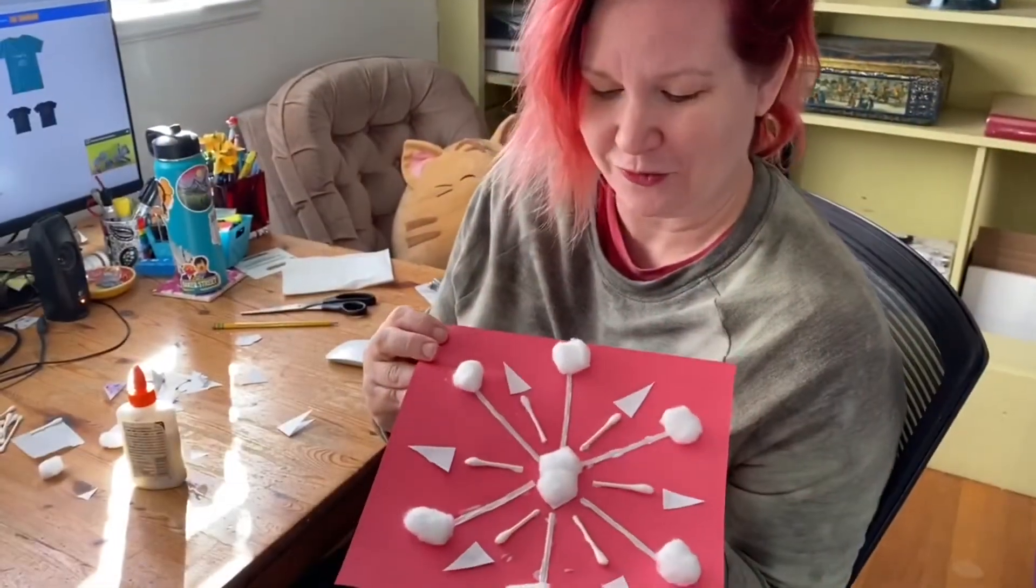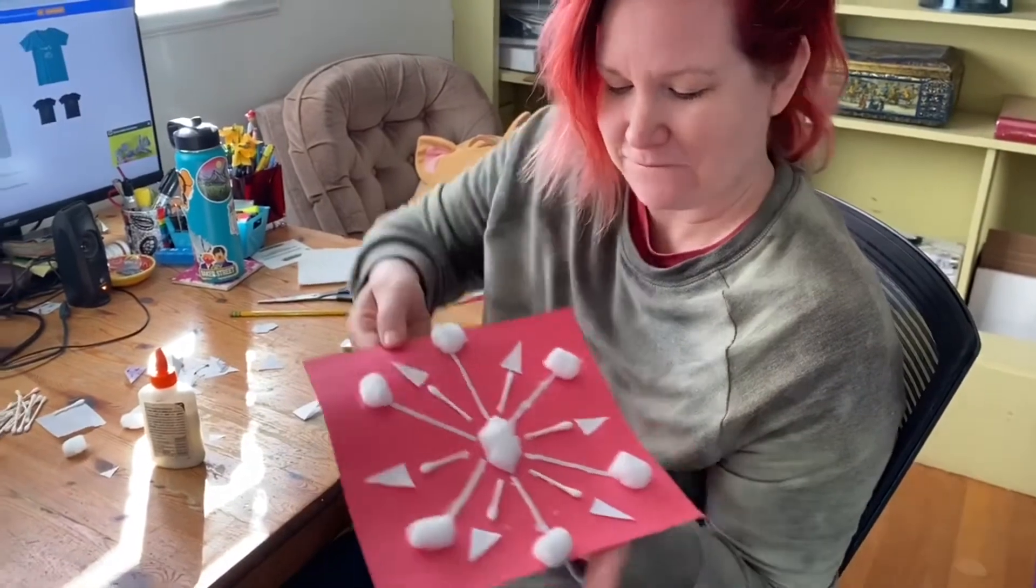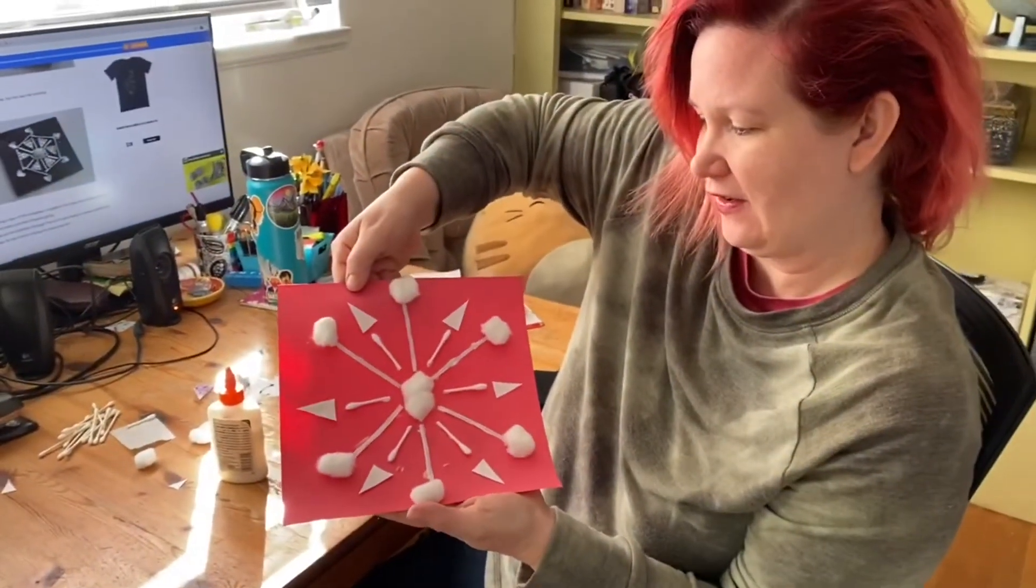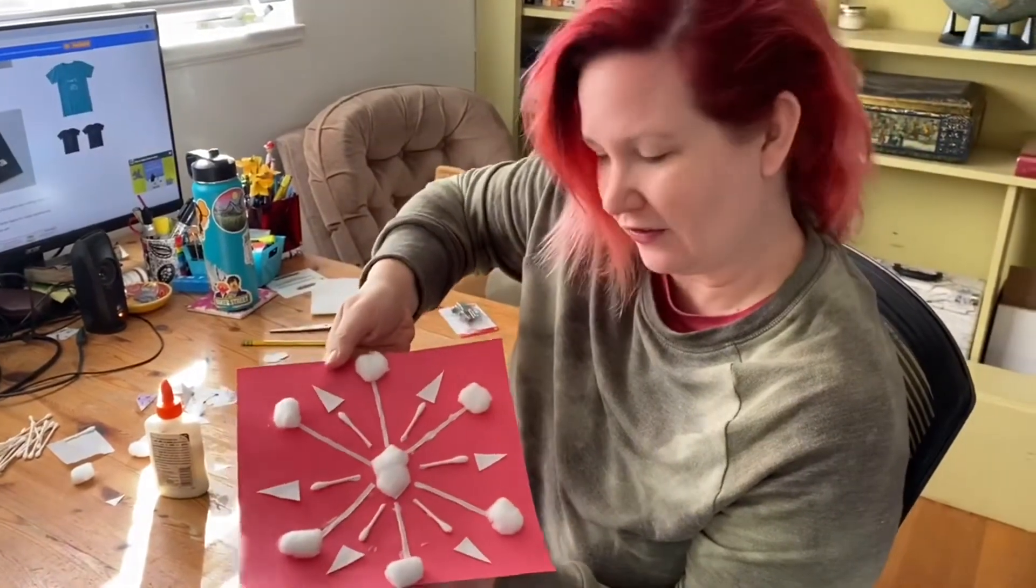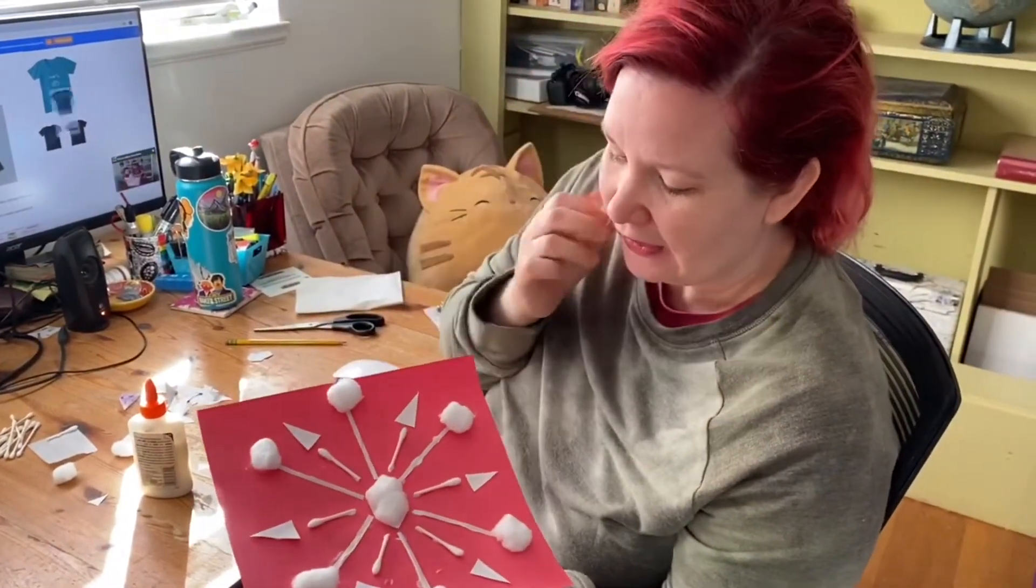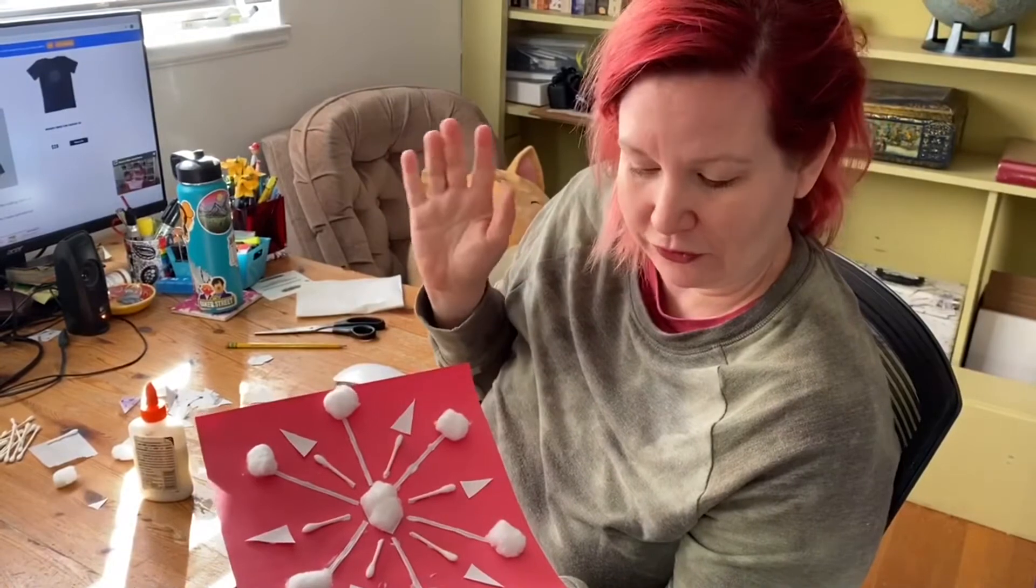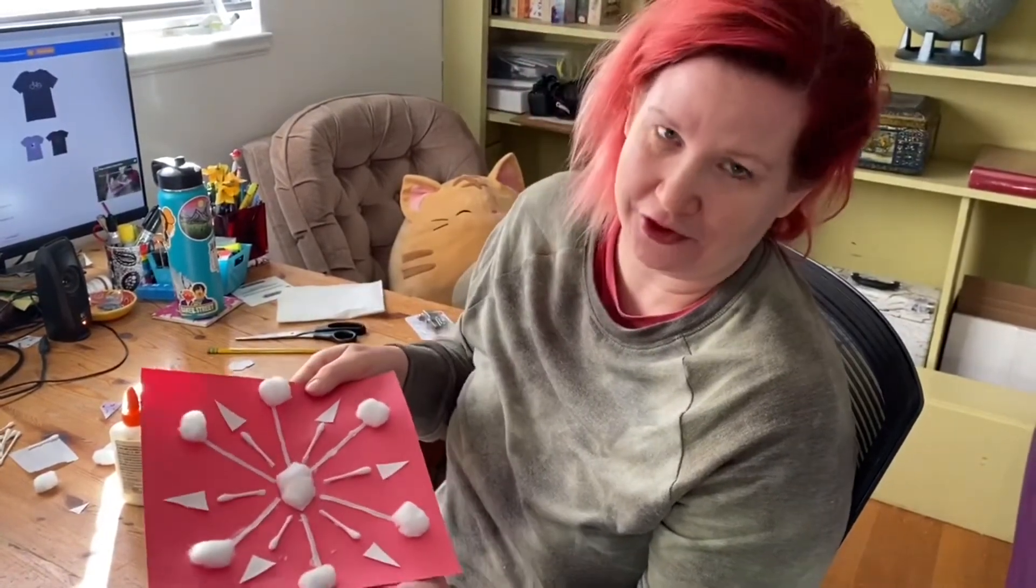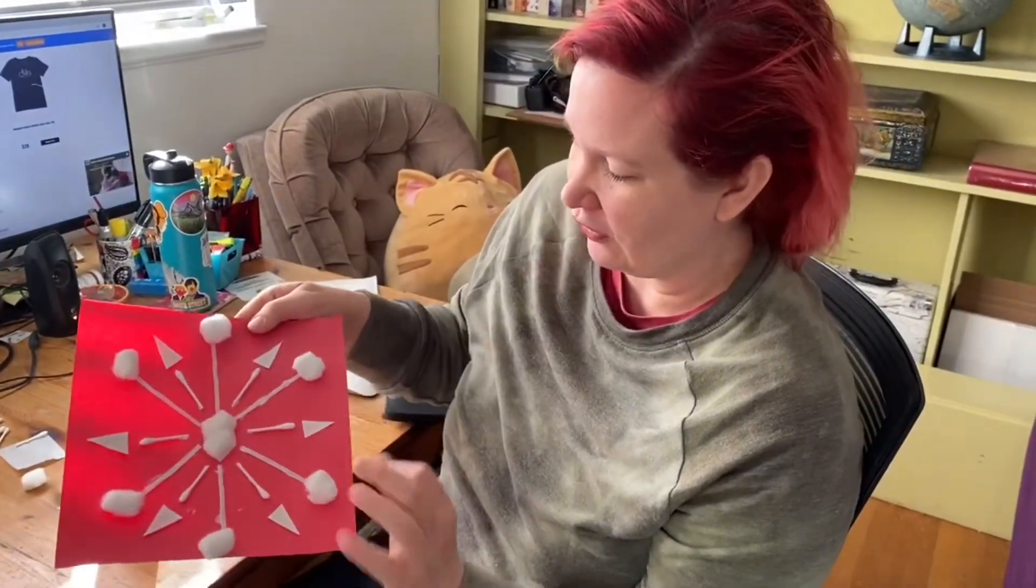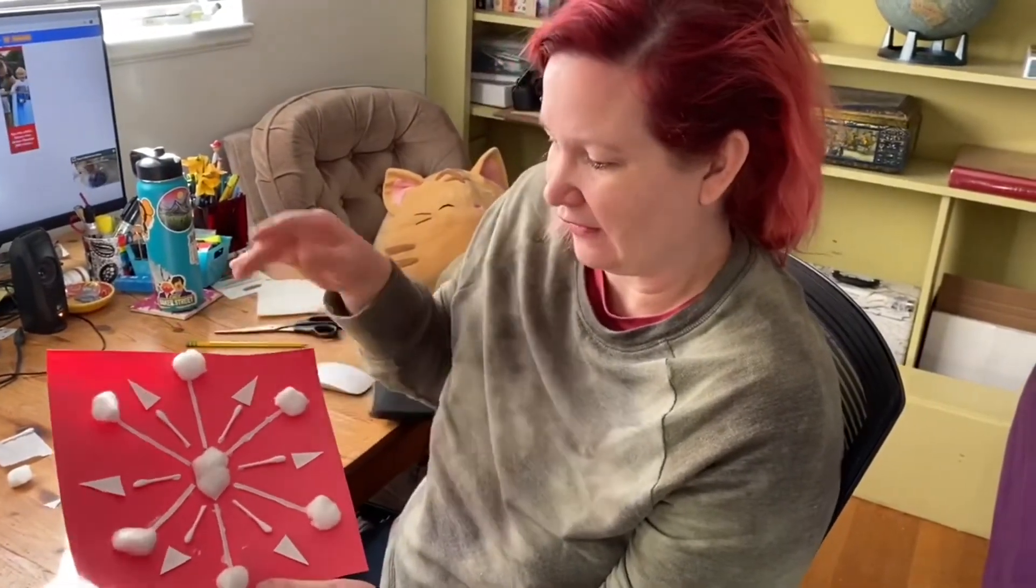All right. So I have my completed snowflake here. And we did it all with household objects, things you can easily find around your house. If you happen to have some glitter, you could add glitter to that. I don't have any glitter. There's lots of things you can do to kind of make this your own. It doesn't have to be exactly like this. It should be however you want it to be.